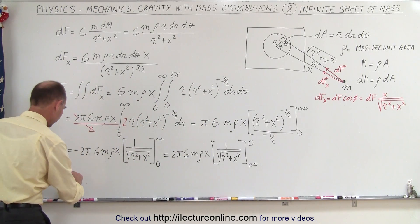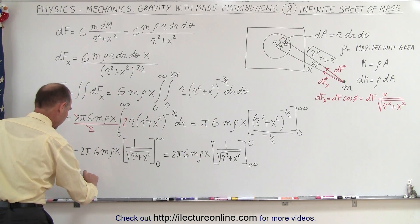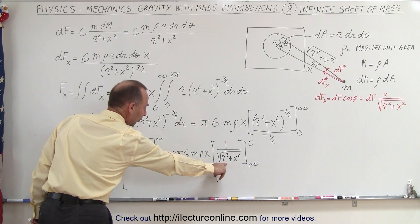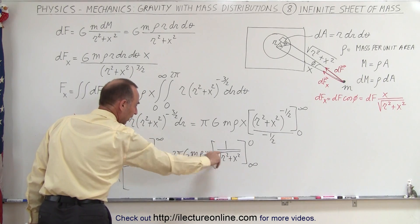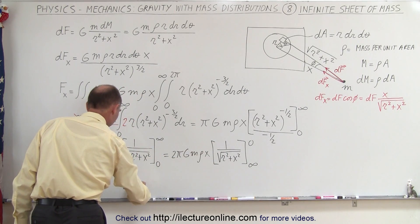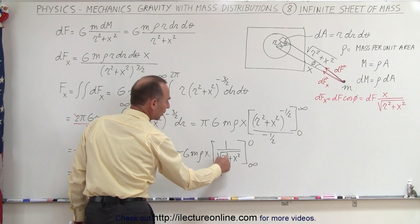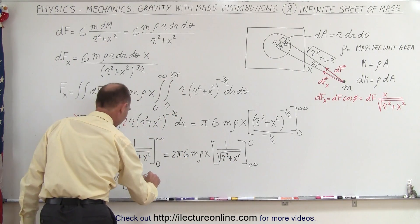So this becomes equal to 2 pi times. Plug in 0 for r, we get 1 over the square root of x squared, which is 1 over x minus, when plug in the lower limit, when plug in infinity in the denominator, 1 divided by infinity is 0, so we get a 0.